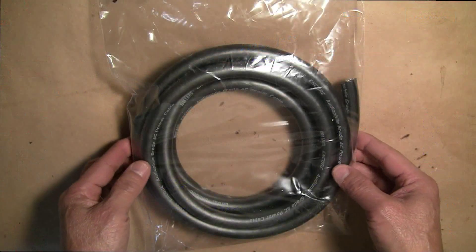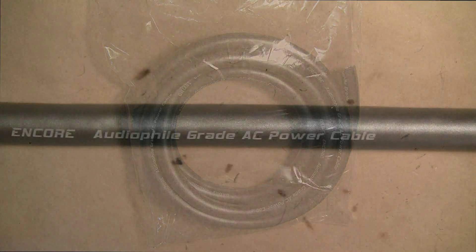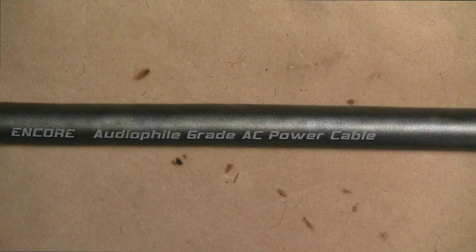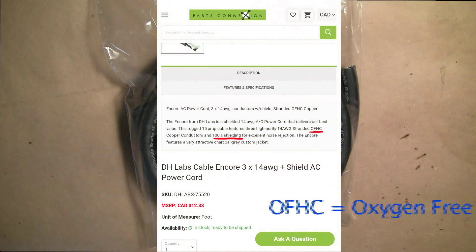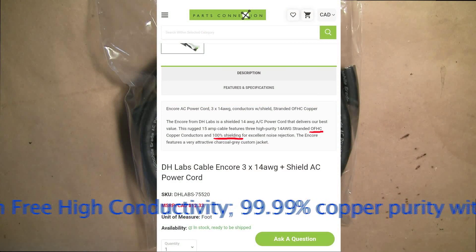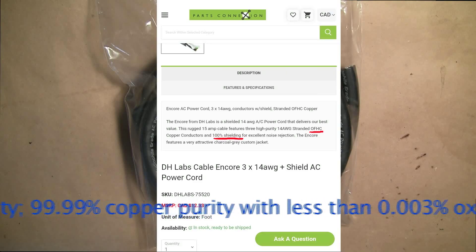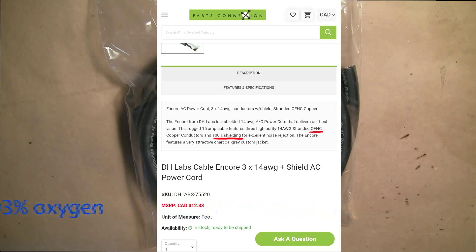For this project I selected the DH Labs Encore power cable. What attracted me to this cable was its three 14 gauge conductors made of OFHC or oxygen free high conductivity copper and its metallic shield. Most power cords are not shielded.